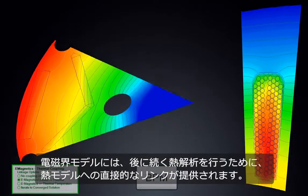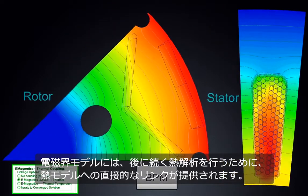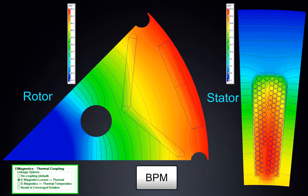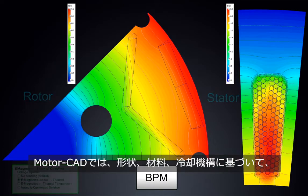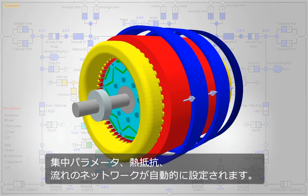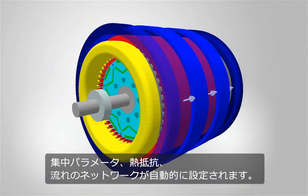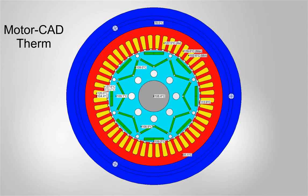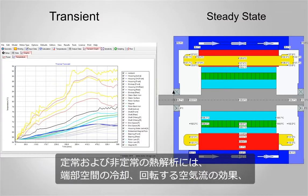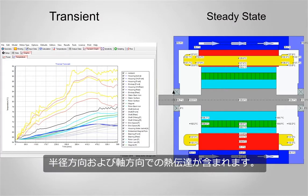The electromagnetic model has a direct link to the thermal model for subsequent thermal analysis. MotorCAD automatically sets up a lumped parameter thermal resistance and flow network based on the geometry, materials and cooling mechanism. The steady state and transient thermal analysis includes cooling of the end space, the effect of rotation on airflow, and heat transfer in both the radial and axial direction.